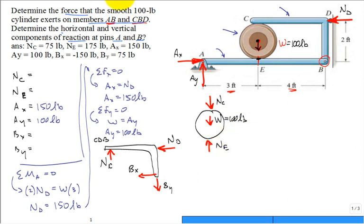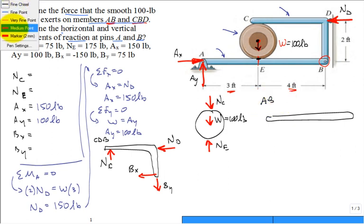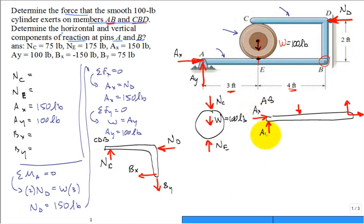And the last free body diagram, I'm going to draw it right here. This will be for member A to B. And let's go ahead and put our Ax, Ay. Pushing down would be NE. And then this is my Bx in that direction and By. So, my choice of Bx and By are consistent between the horizontal member and that L-shaped member. They need to be.